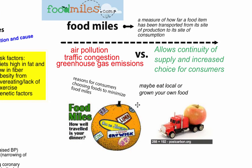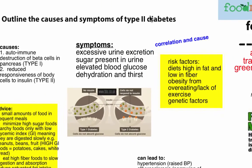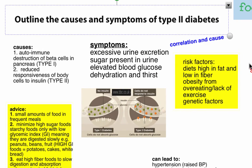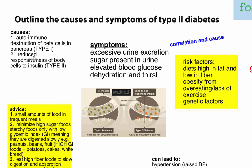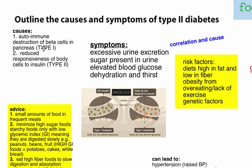Next issue is diabetes, which has come up a few times in this unit and also in the homeostasis unit. There are two types. Type 1 is more genetically induced — it's an autoimmune disease where your body destroys beta cells in structures called the islets of Langerhans in the pancreas. Those beta cells produce insulin, so if they're destroyed, you can't produce insulin.